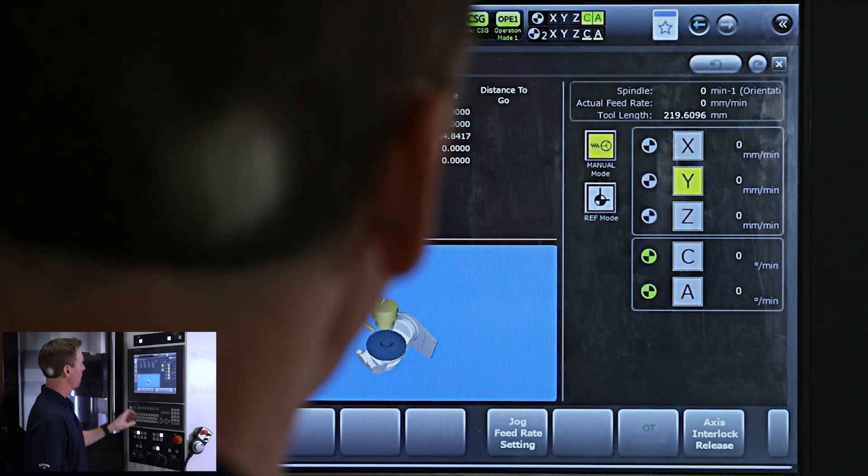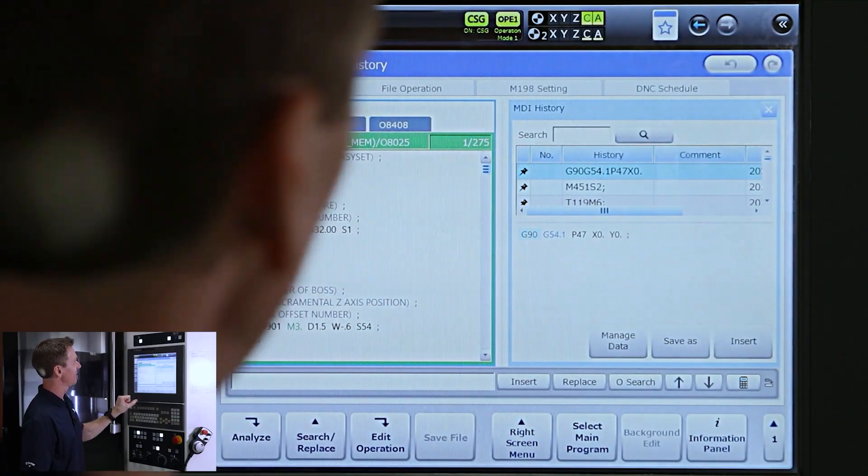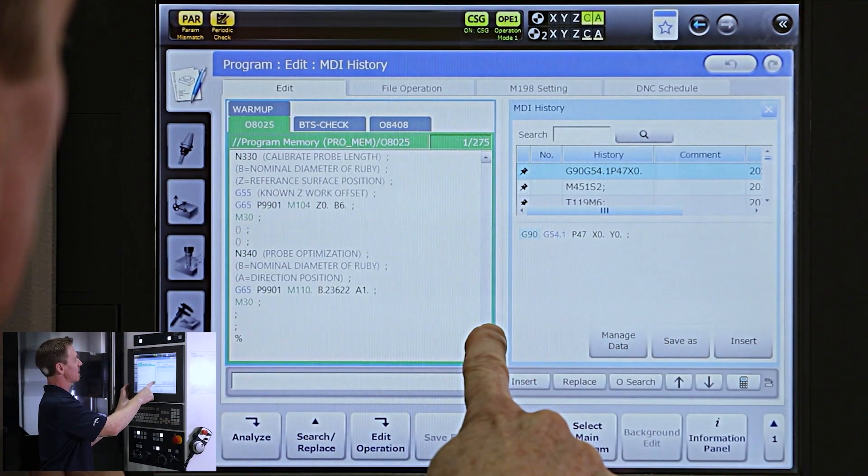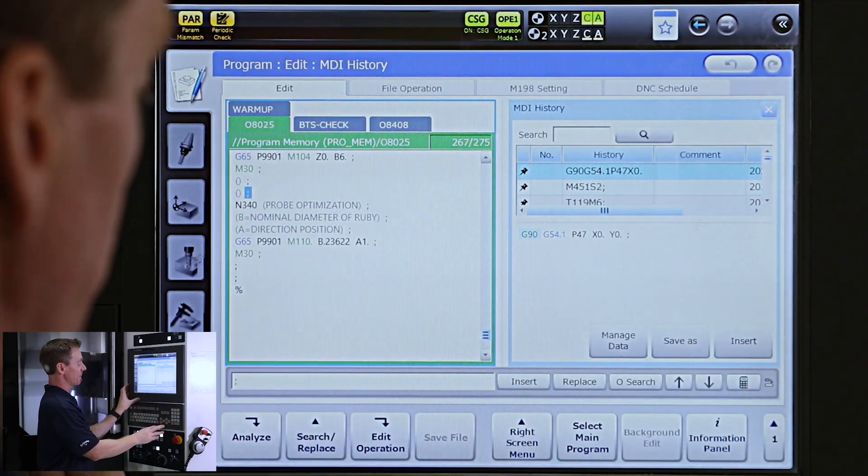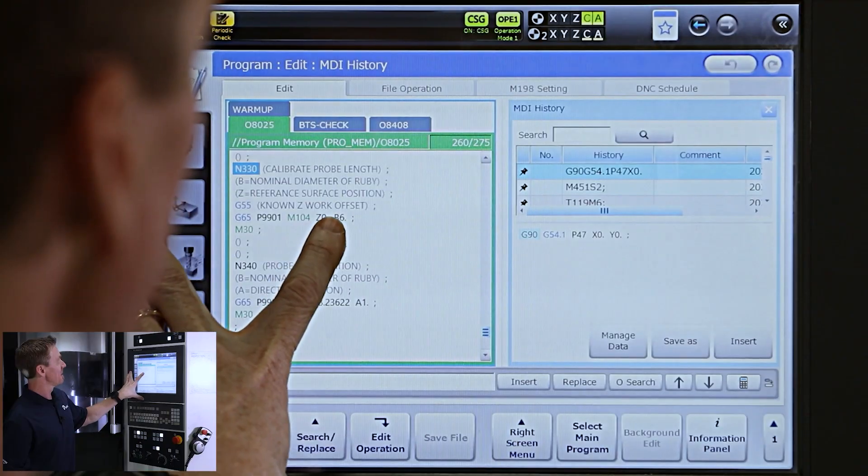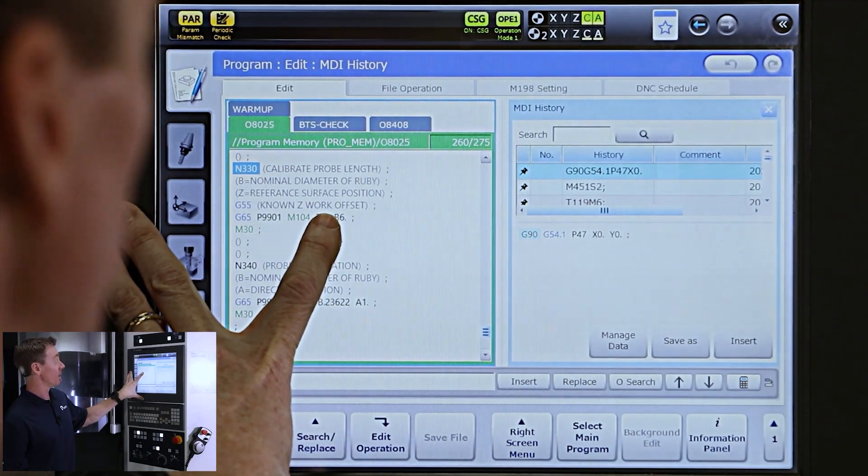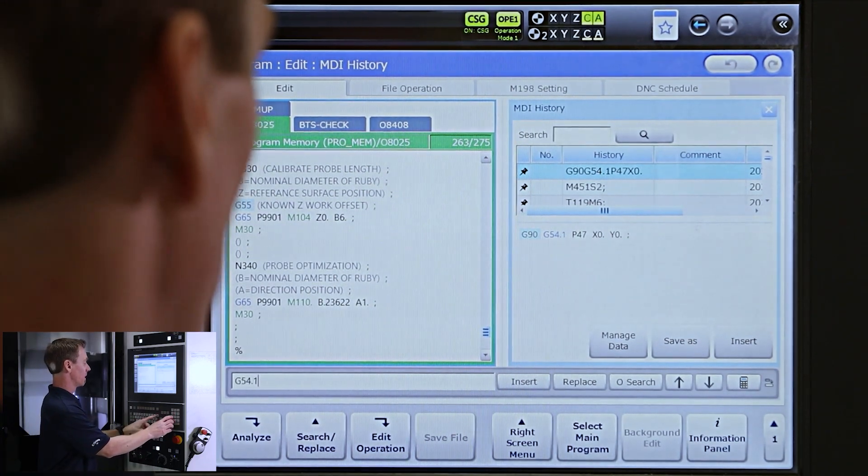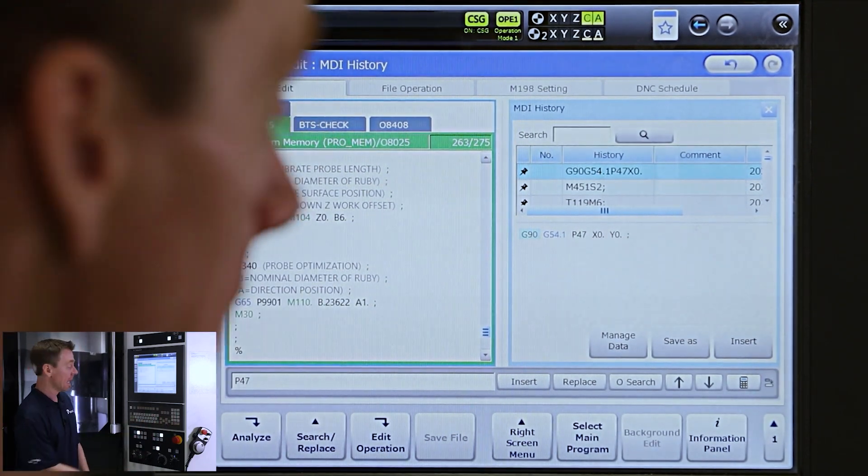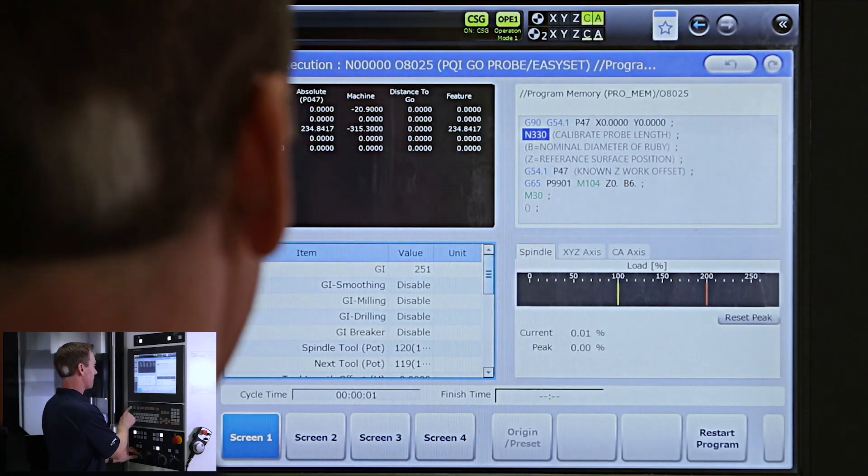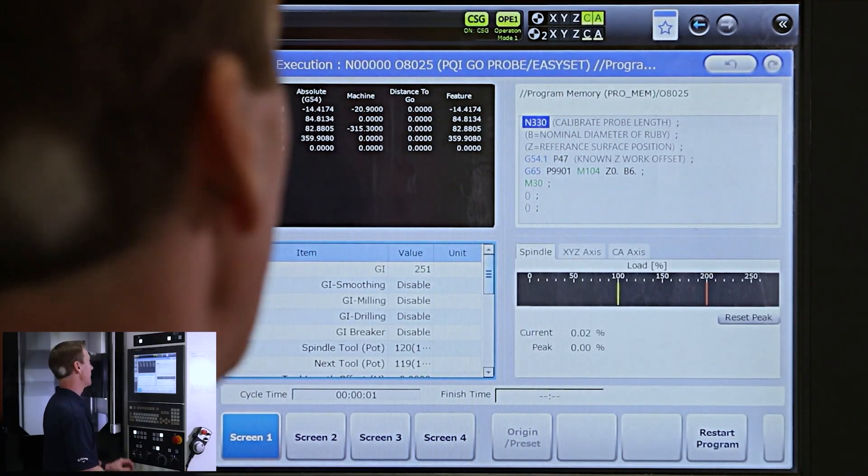We're going to call up our 8025 probing program, easy step probing program. We're going to come all the way down to N330 here. One thing we need to match is our, make sure that our Ruby diameter is input correctly and our work offset is the correct work offset where we put our values. At this point, we can go to the end block and we hit cycle start and away we go.